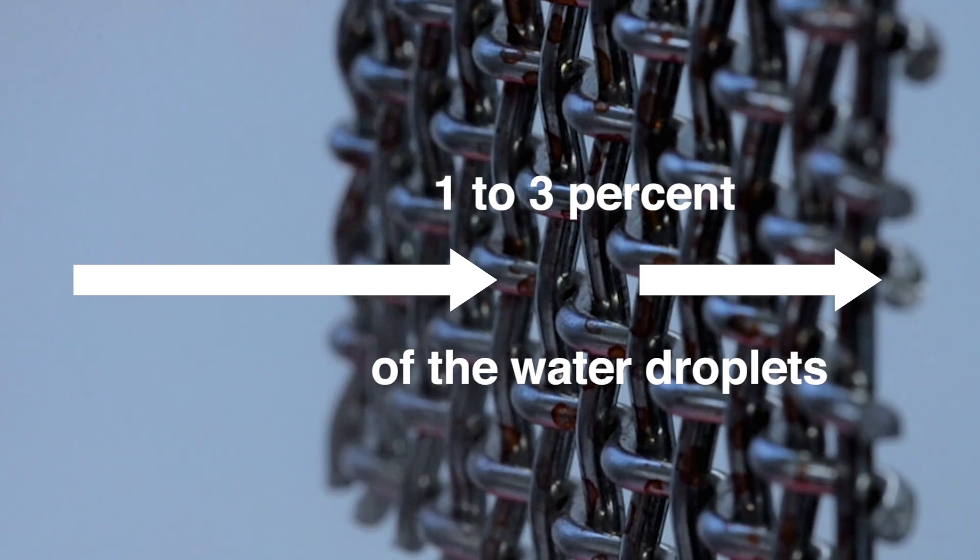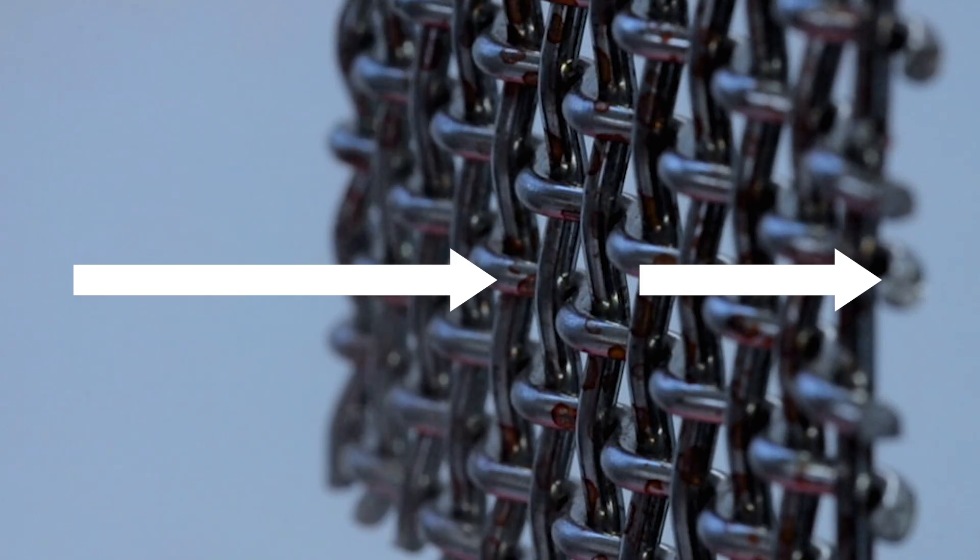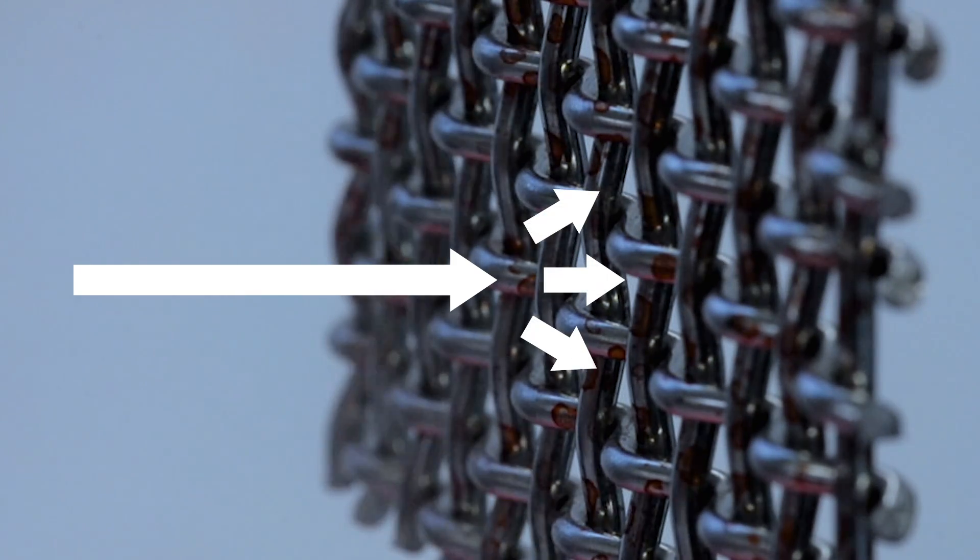The reason for such a tiny percentage is the result of aerodynamics. As a stream of air passes an obstacle, such as the wires in these mesh fog-catching screens, the airflow naturally deviates around the obstacle, thus carrying droplets that were heading toward the wire off to the side.